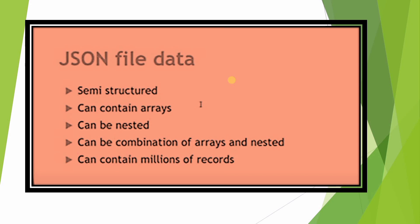In JSON processing you have a different method. You have to create one variant column and load data first into a stage table, then parse the data into the normal tabular format. JSON is a semi-structured data type — it doesn't follow the tabular structure like CSV or PSV files, which load directly into tabular format in Snowflake.